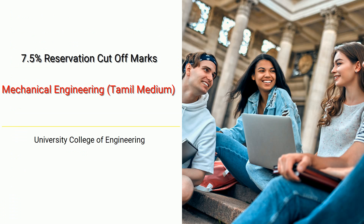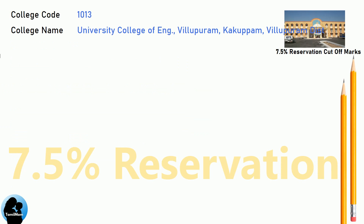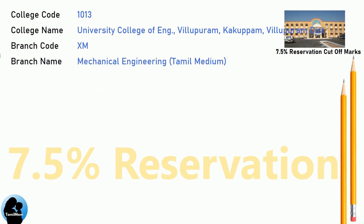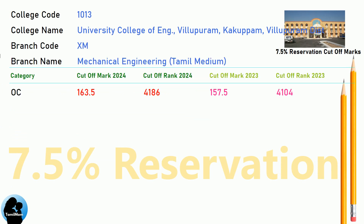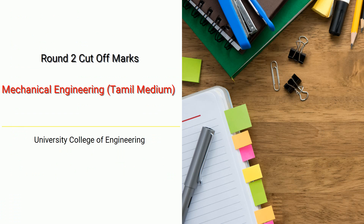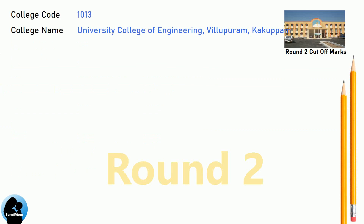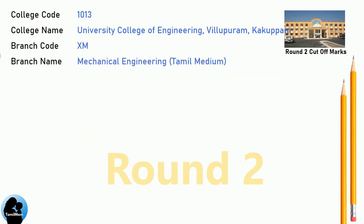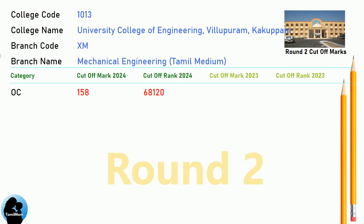DNA 7.5 Reservation Cut-off for University College of Engineering, Villapuram in Mechanical Engineering, Tamil Medium. DNA Round 2 Cut-off for University College of Engineering, Villapuram in Mechanical Engineering, Tamil Medium.